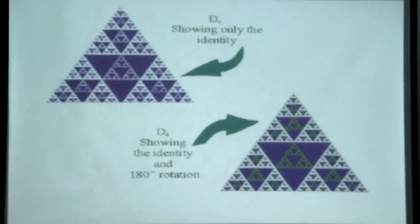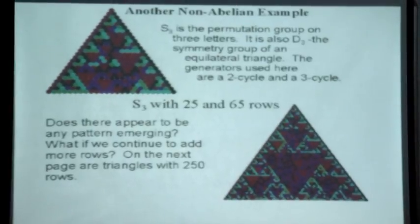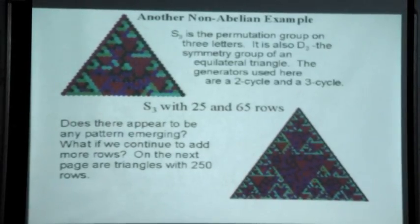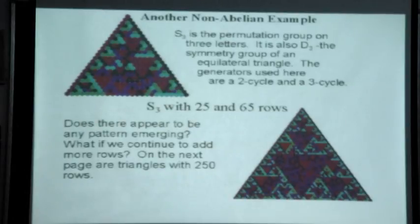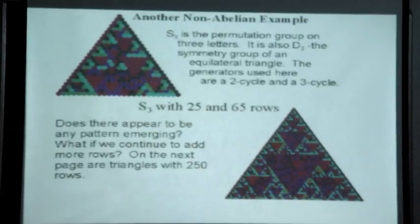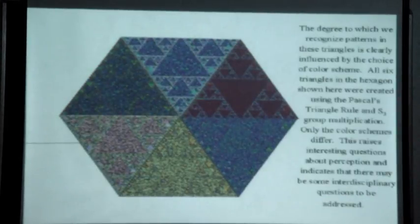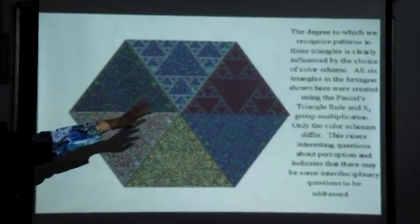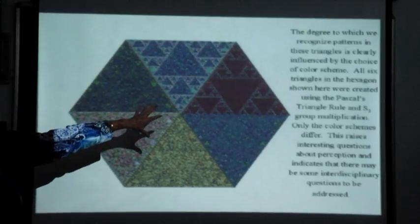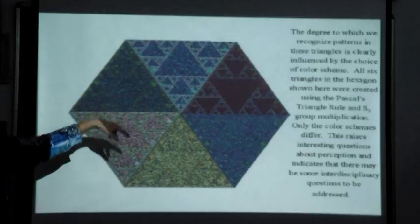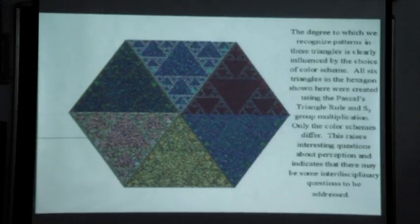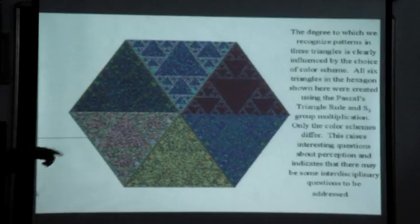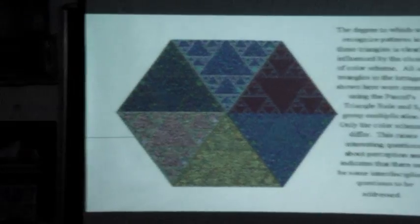Here's another non-abelian example: S3, which is also D3. Notice the pattern is not as nice — in fact it's really quite chaotic. But an interesting thing is all six of these are Pascal-Wallis triangles with D3 or S3. The only difference is the colors have been rotated, but look at how dramatically different the patterns appear.